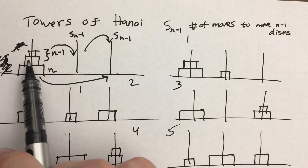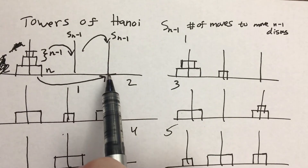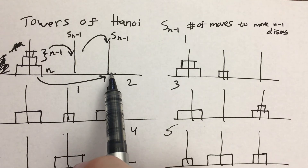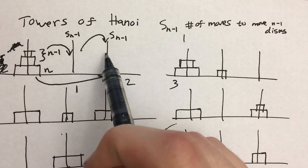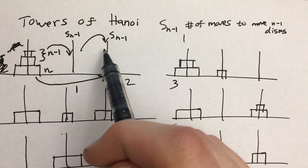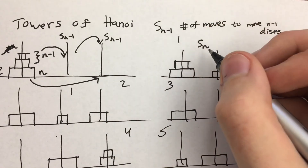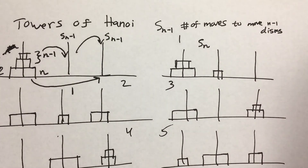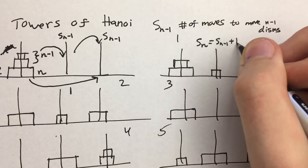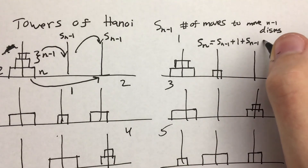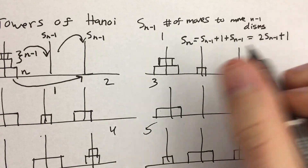We're going to use those N minus one moves to uncover the bottom disc. Then we use one move to move the bottom disc, and then another S sub N minus one moves to move the N minus one discs back on top of the Nth disc. So that tells us S sub N equals S sub N minus one plus one plus S sub N minus one, which is just two times S sub N minus one plus one.